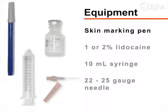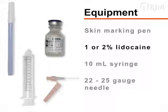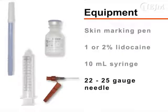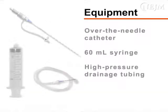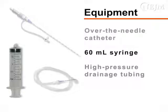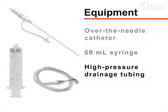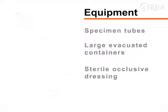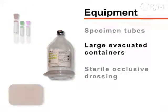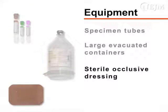You will also need a skin marking pen, one or two percent lidocaine, a 10 milliliter syringe, and a 22 or 25 gauge needle. For collection of ascitic fluid, you will need an over-the-needle catheter device, a 60 milliliter syringe, and high pressure drainage tubing. You will also need specimen tubes, large evacuated containers, and a sterile occlusive dressing.